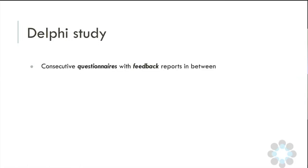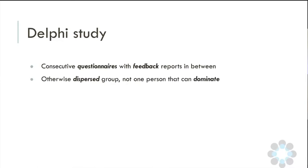A Delphi is appropriate here because there are only a few papers on the topic. Delphi is a structured group communication method to find a set of items that the community agrees upon. In a nutshell, Delphi really involves consecutive questionnaires with feedback reports in between, and everybody gets to see the feedback from everybody else. This is helpful because you can reach out to an otherwise much dispersed group, and because people give their feedback anonymously, no one person can really dominate the debate.